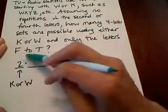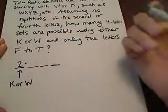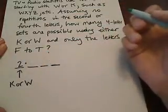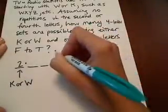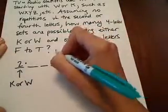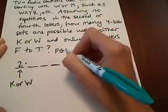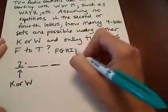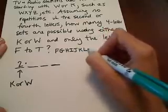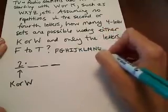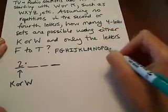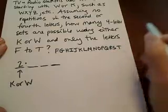And then they only want us to use the letters F through T. So the first thing is, let's actually list those letters out. So the letters F through T, so we would have F, G, H, I, J, K, L, M, N, O, P, Q, R, S, and T.